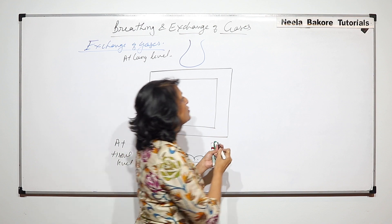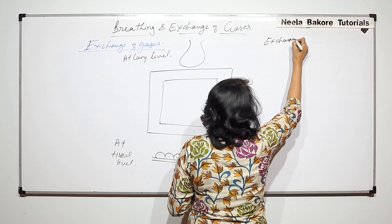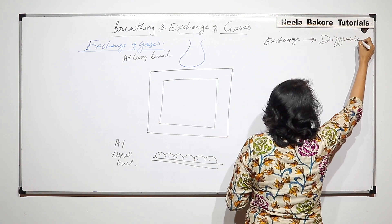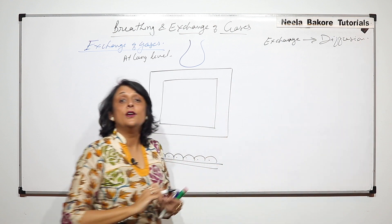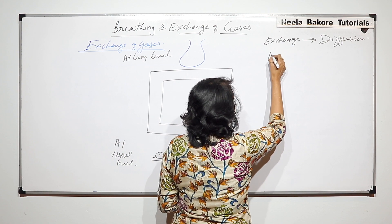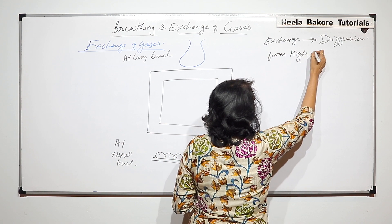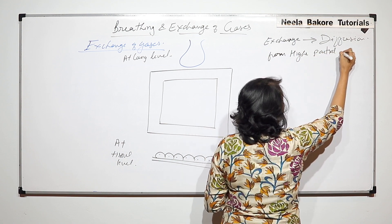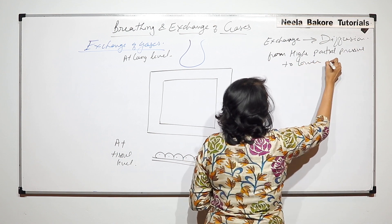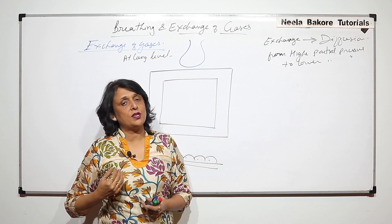Gaseous exchange is always by diffusion — not osmosis. Diffusion means movement of gases from a region of higher partial pressure to a region of lower partial pressure. This is simple diffusion: higher partial pressure to lower partial pressure.